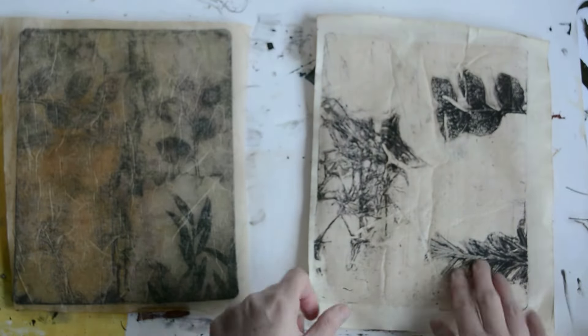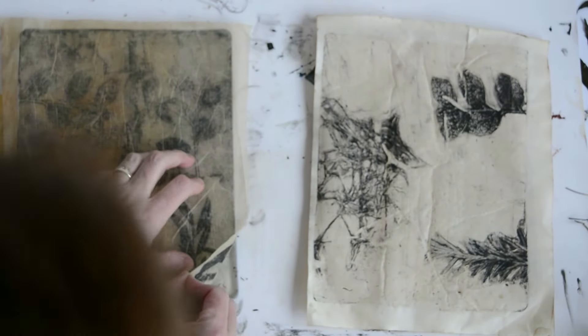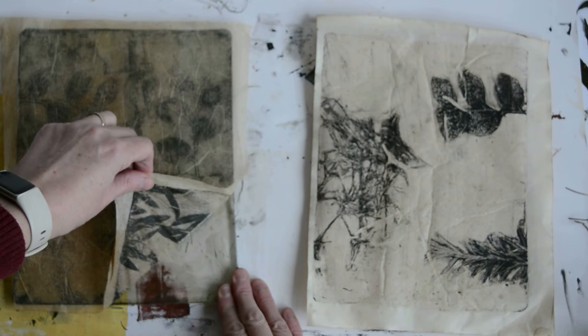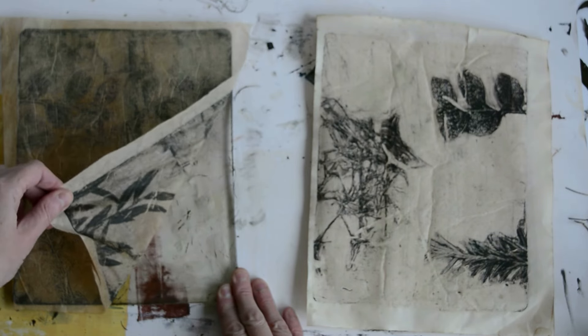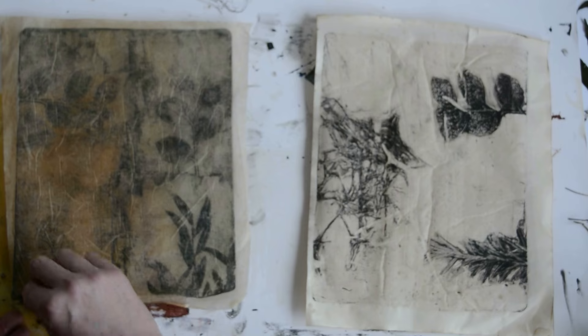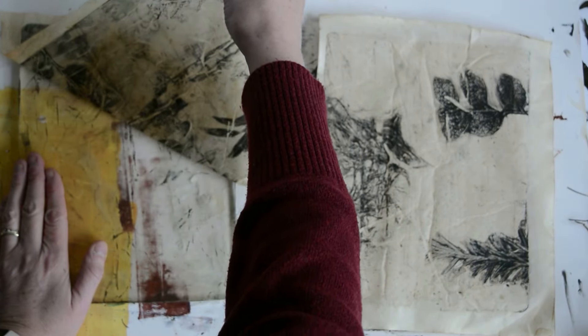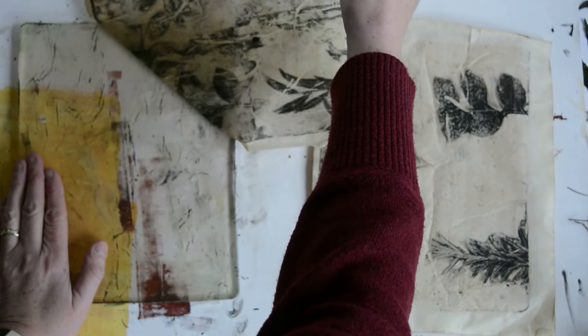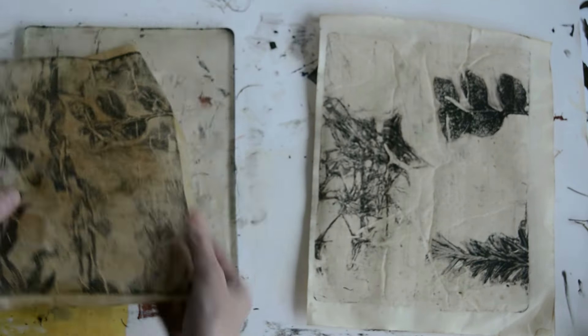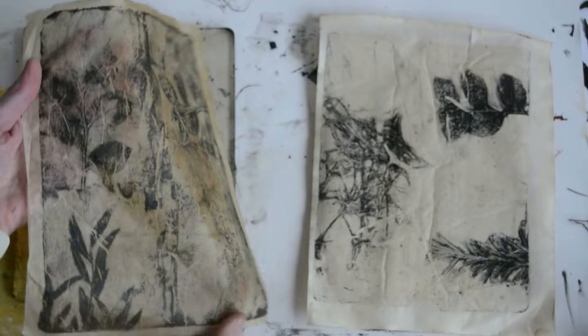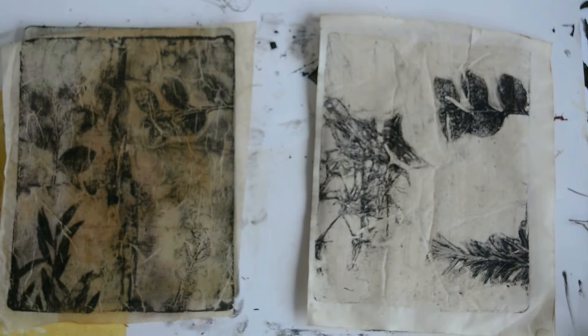So whilst you're experimenting with different objects you found, rosemary, some straw, different plants, you need to take lots of different prints, some positive, some negative, some on transparent paper, some on non-transparent paper, so you've got a huge variety of prints to work with like here.